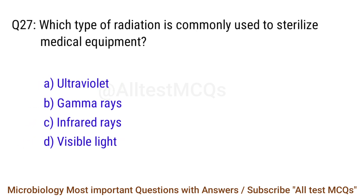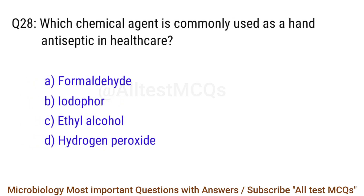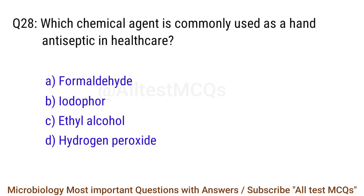Q27. Which type of radiation is commonly used to sterilize medical equipment? The right answer is option B: Gamma rays. Q28. Which chemical agent is commonly used as a hand antiseptic in healthcare? The right answer is option C: Ethyl alcohol.